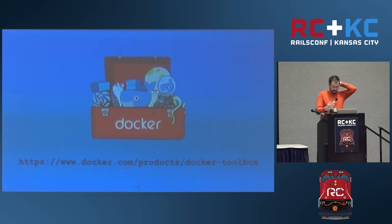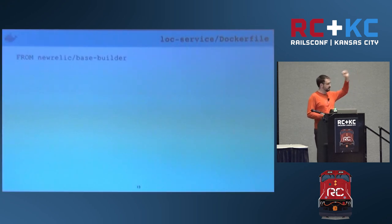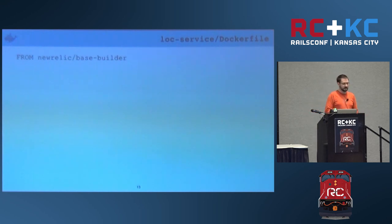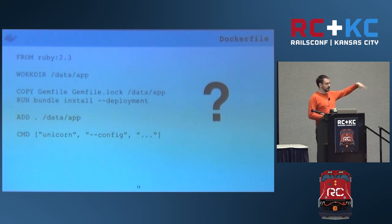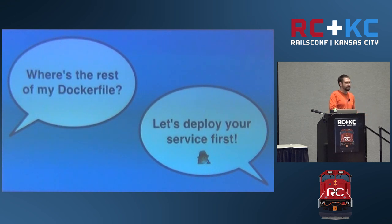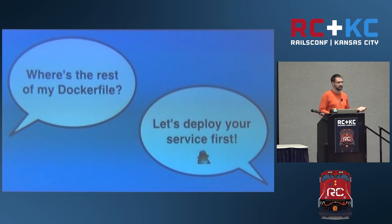Jane sits down with Jill and writes a file called Dockerfile in the root of her application. Jill has her write just one line: a FROM statement specifying what image to start from when building. Jane's confused — shouldn't there be more? Working directories, copies, run commands, shell scripts? This is an image from New Relic, but where's the rest of the Dockerfile? Jill says it's a fair question, but let's get the thing deployed to staging first and dig into this later.